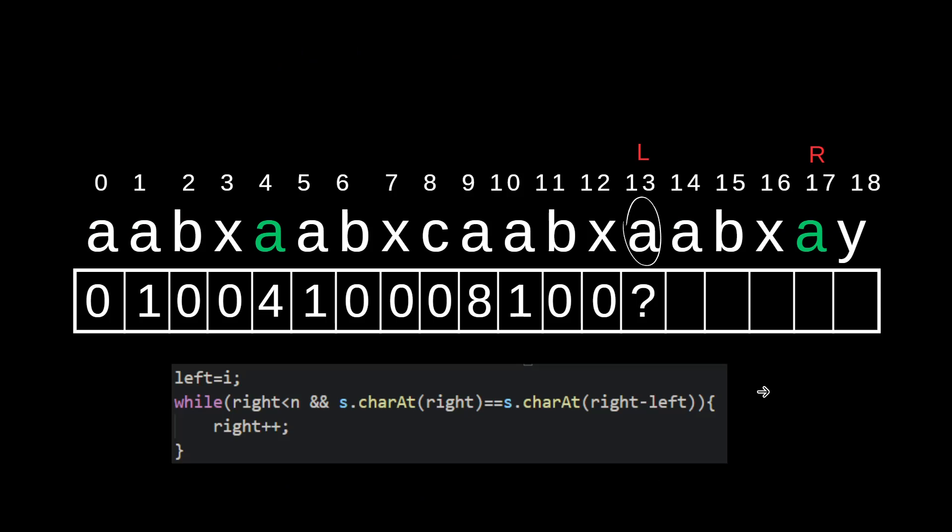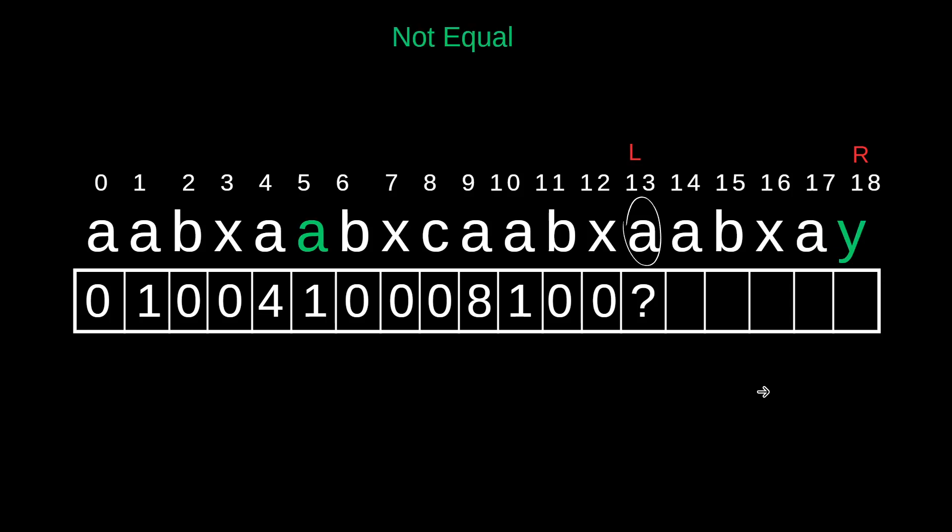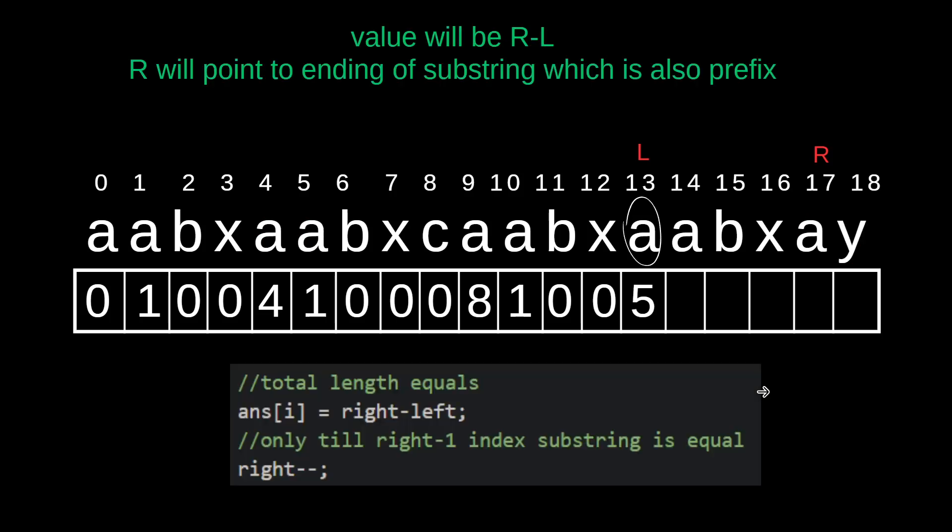A and A is also equal — go to the next character. It is not equal. What's the value? 18 minus 3 is 5, meaning 5 characters are equal — so put 5. And R will decrement.